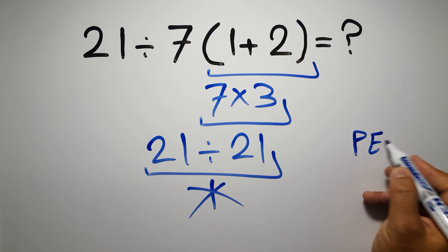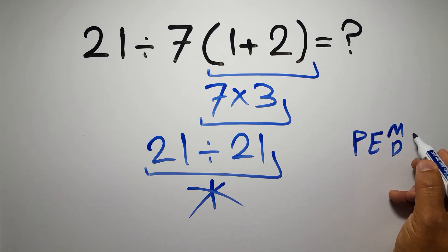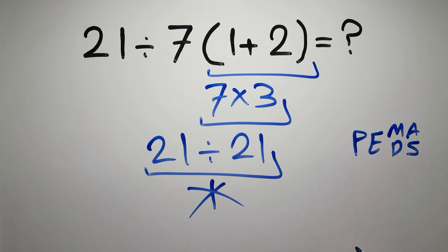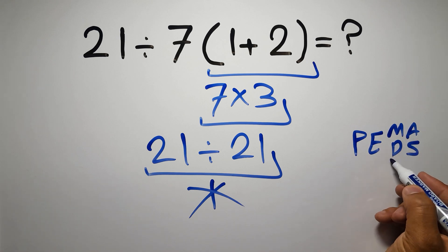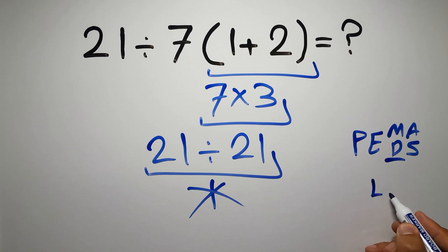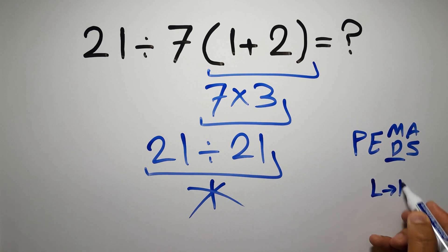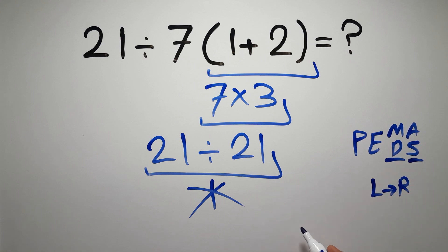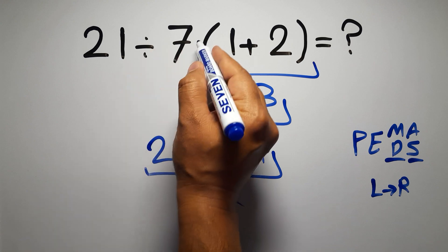...exponents, then multiplication or division, and finally addition or subtraction. Remember that multiplication and division have equal priority and we have to work from left to right, and the same applies to addition and subtraction. In this expression we have...